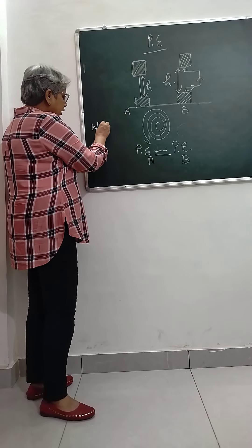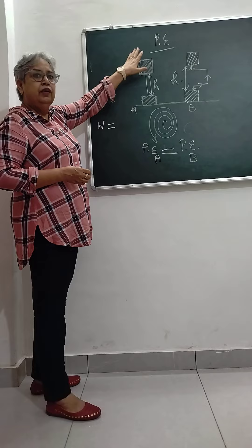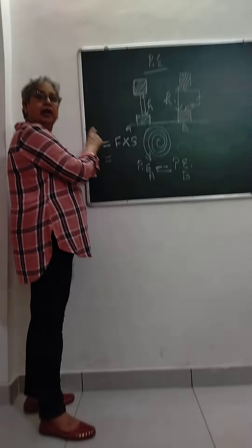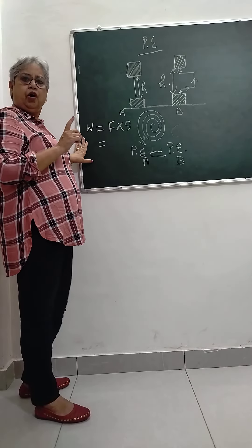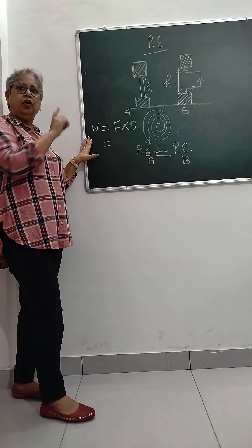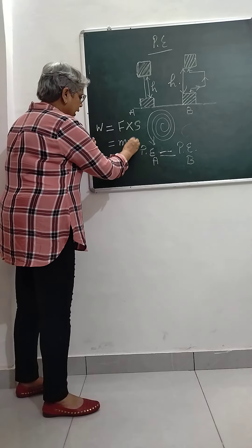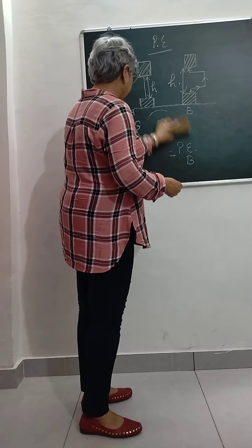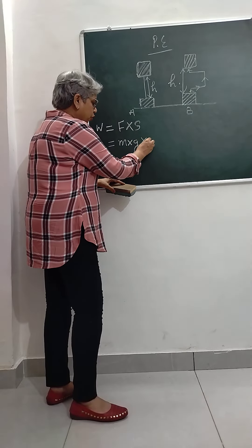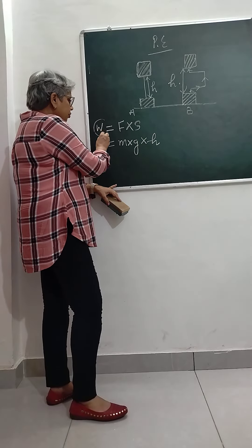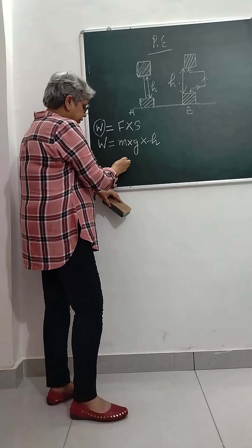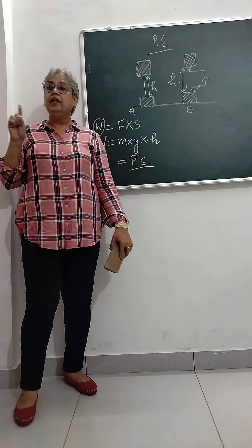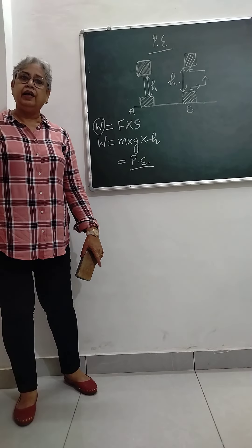The work done in moving the object from ground level to height h is given by F into S. In this case, F is the weight of the object, or the gravitational pull on the object, which is equal to m into g. So the potential energy equals m times g times h.